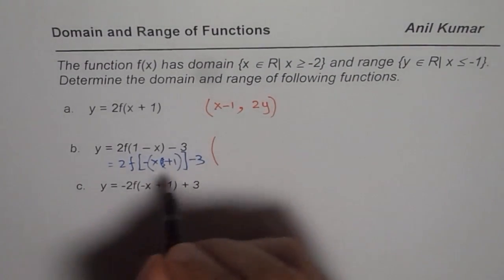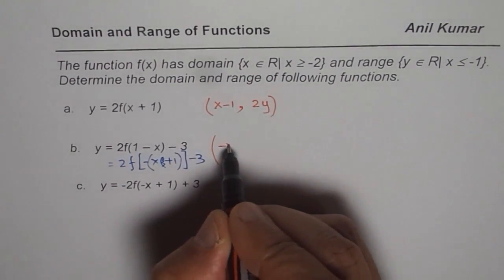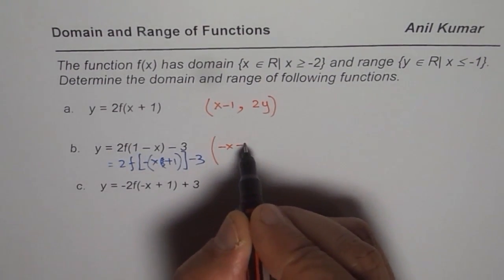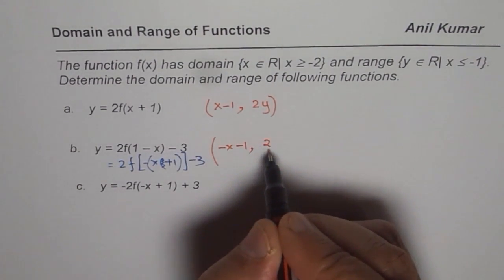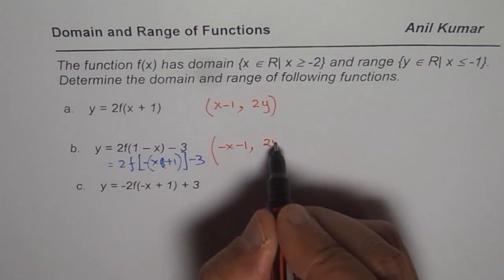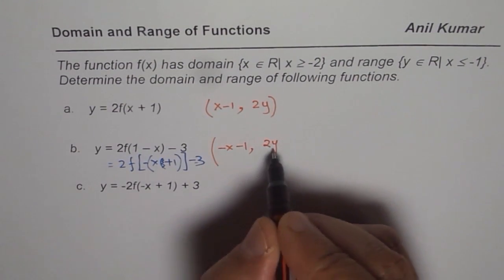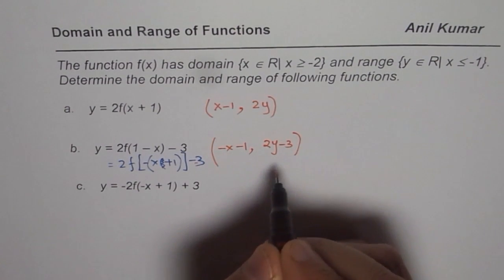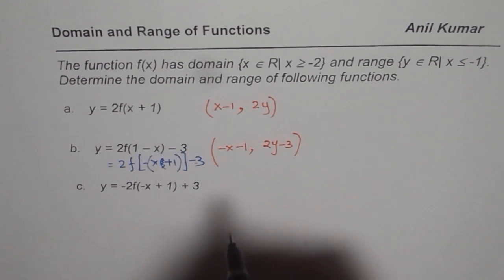In this case, x values will become negative. So we have negative x and plus 1, meaning moving left by 1 unit. The y values get multiplied by 2 of the original y and then minus 3. So these are your x and y values.